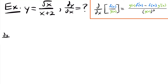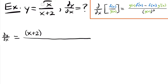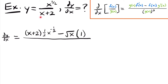Starting our derivative, dy/dx equals the original denominator x plus 2, times the derivative of the square root of x. We can rewrite square root of x as x to the 1/2 power to make the power rule easier to visualize. The derivative of x to the 1/2 is 1/2 times x to the negative 1/2. Then we subtract the original numerator, the square root of x, multiplied by the derivative of the denominator, which is just 1, since the derivative of x is 1 and the derivative of 2 is 0.